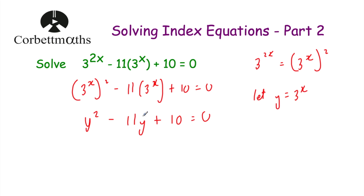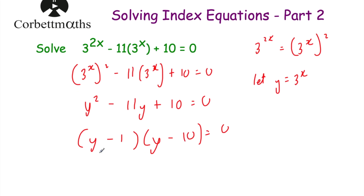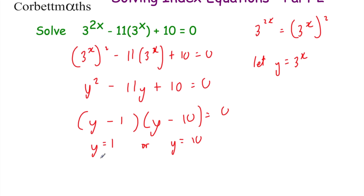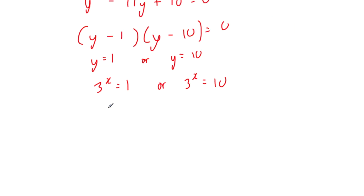Now we let y equal 3 to the power of x, giving us a nice quadratic: y squared subtract 11y plus 10 equals 0. Factorizing, we need two numbers that multiply to 10 and add to negative 11 — that's minus 1 and minus 10. So y equals 1 or y equals 10. Both of these could work. For y equals 1: 3 to the power of x equals 1, so x equals 0, because 3 to the power of 0 is 1.